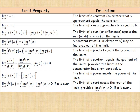On this page, before we get into examples, there are several properties of limits listed. The first says the limit of c equals c as x approaches b — c represents a constant. No matter what value x approaches, the limit of a constant equals the constant.